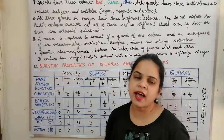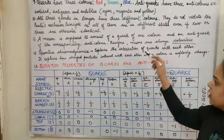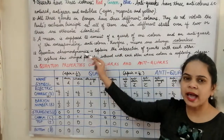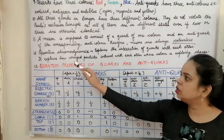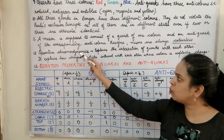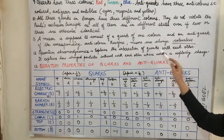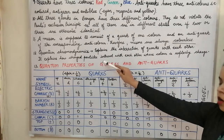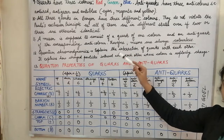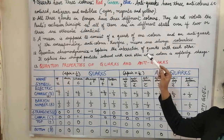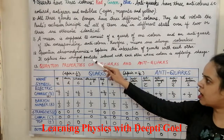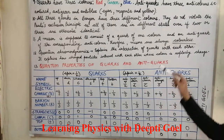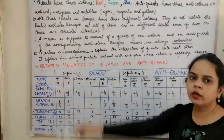The theory that explains the interaction of the quarks is called quantum chromodynamics. 'Chromo' is for the color dynamics. The study of the quarks is called quantum chromodynamics. It explains how the charged particles — the quarks — interact with each other, where color is replacing the charges.